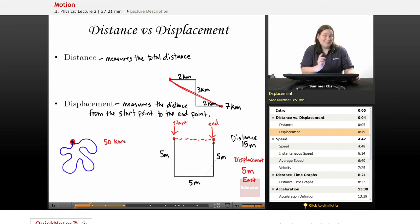However, your displacement, since you started and ended in the same spot, your displacement is zero. Zero kilometers, no direction, because you started and ended in the same point. You haven't actually been displaced. You ended up where you started.